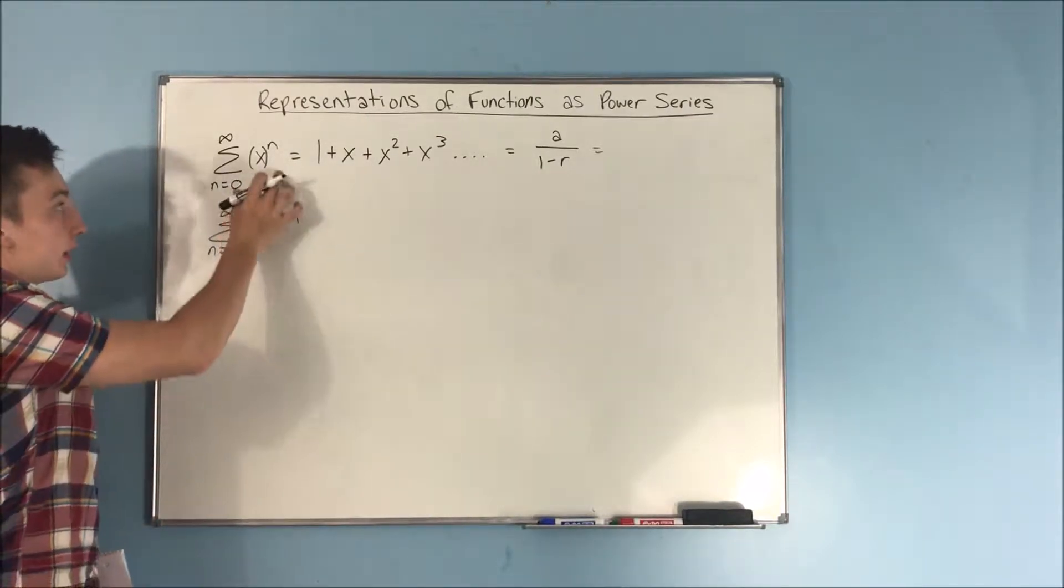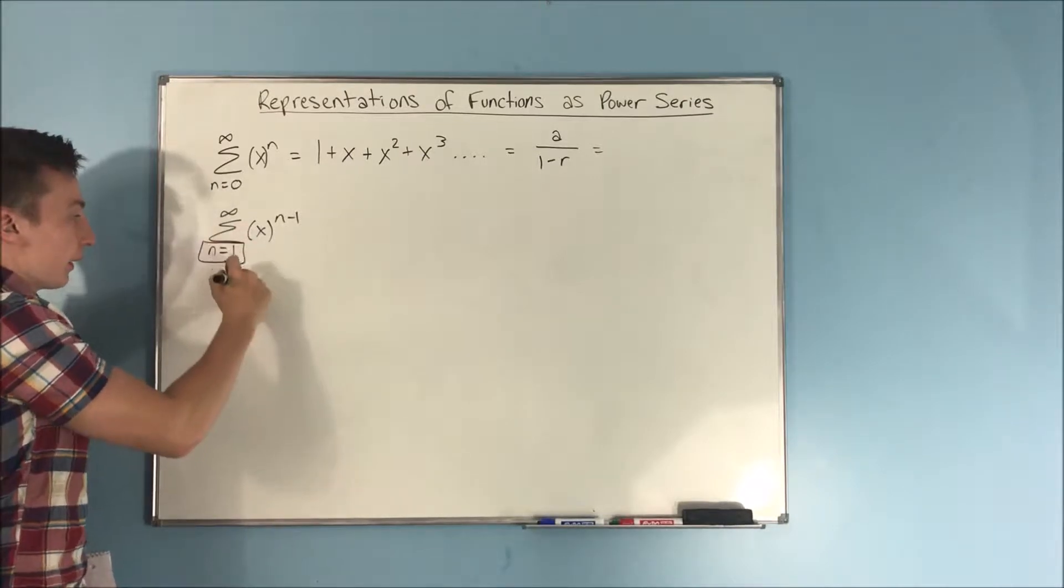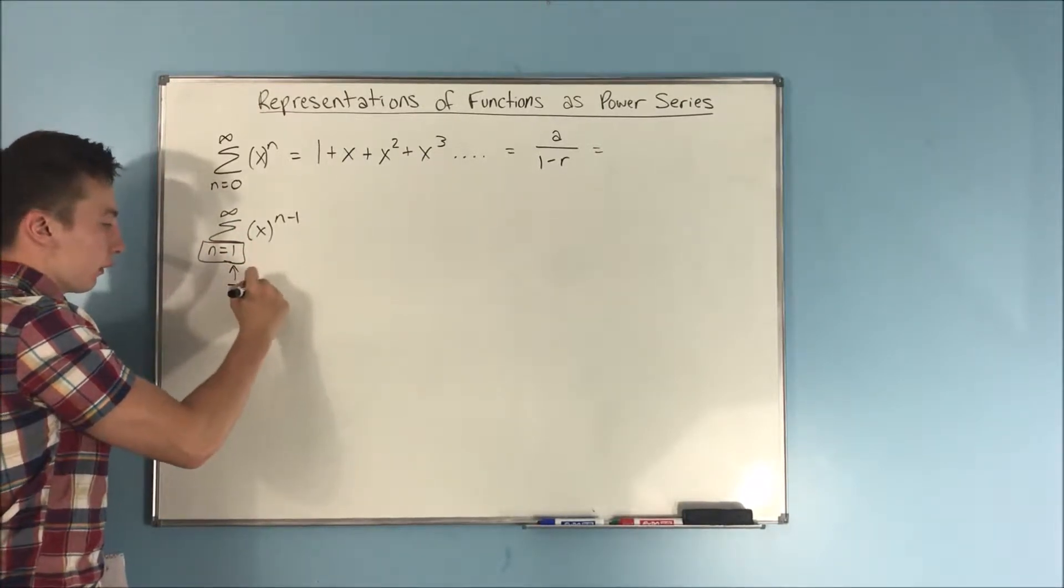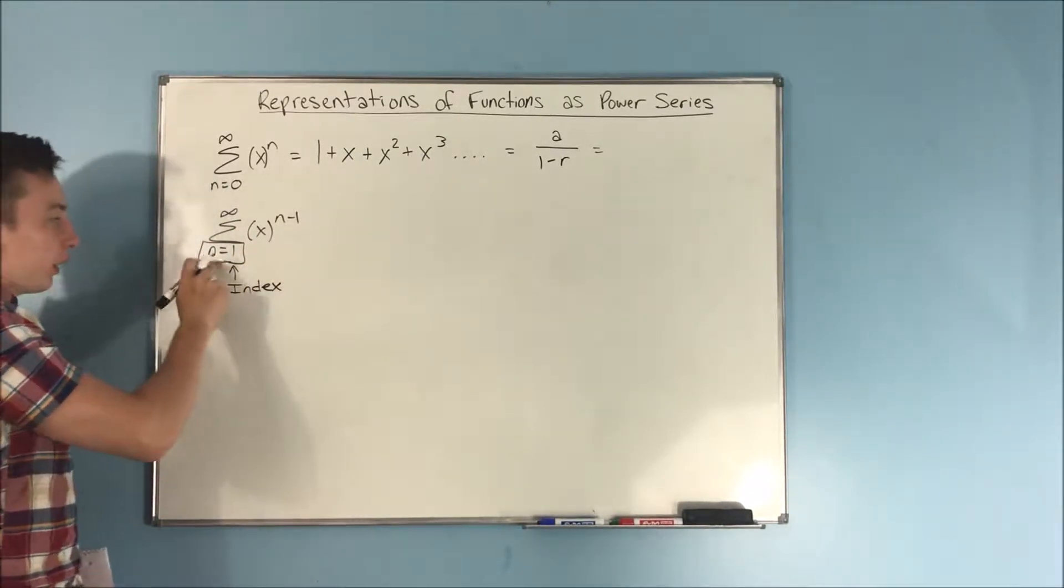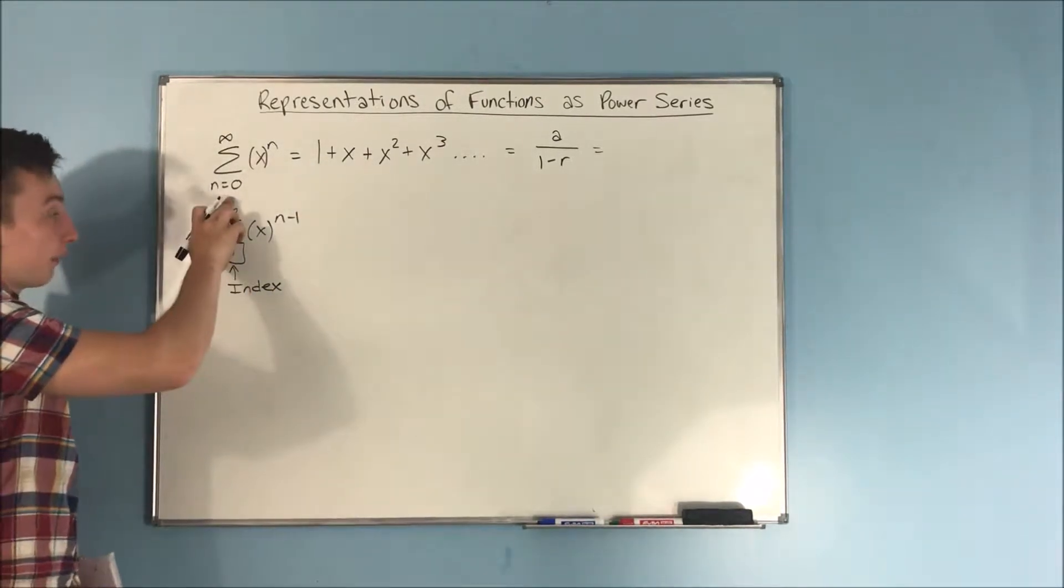What you do to get from here to here is, we change the index. This is called the index. We started from n equals 1, but here we start from n equals 0.